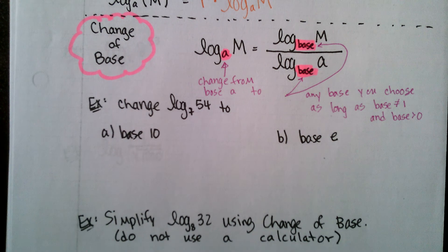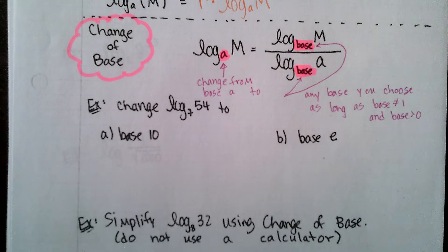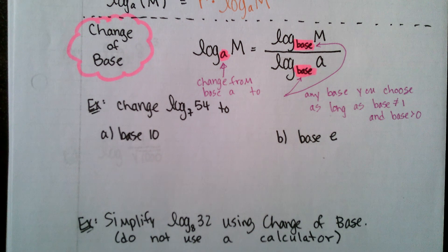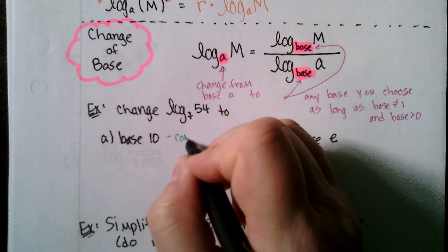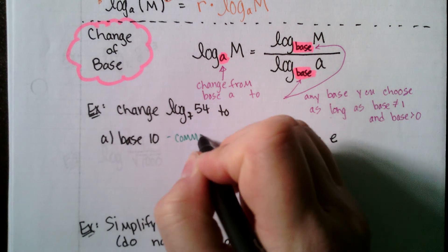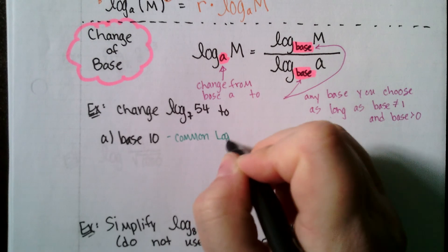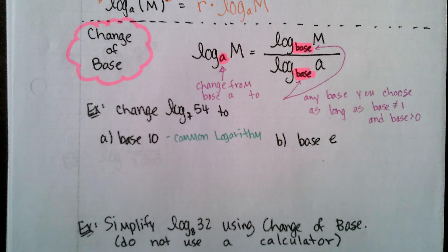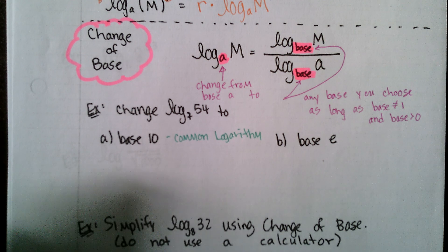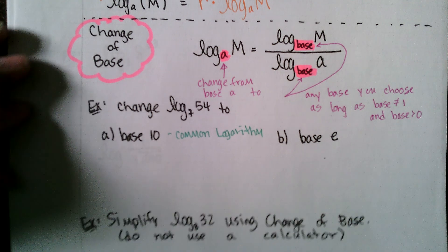We're going to change log base 7 of 54 into base 10, and then into base e. Remember, when working with base 10, that is a common logarithm — we don't write log base 10, we just write log, because if no base is written it is assumed to be a common log.